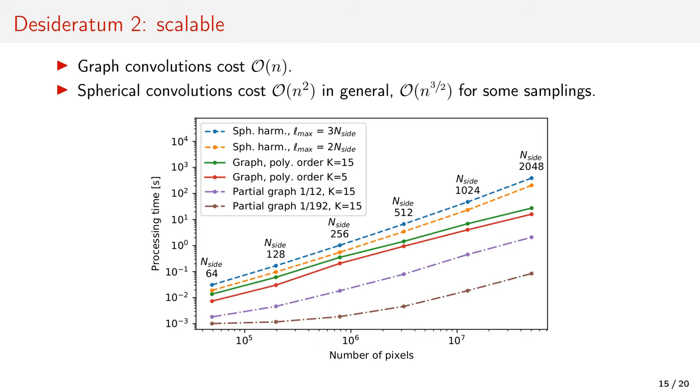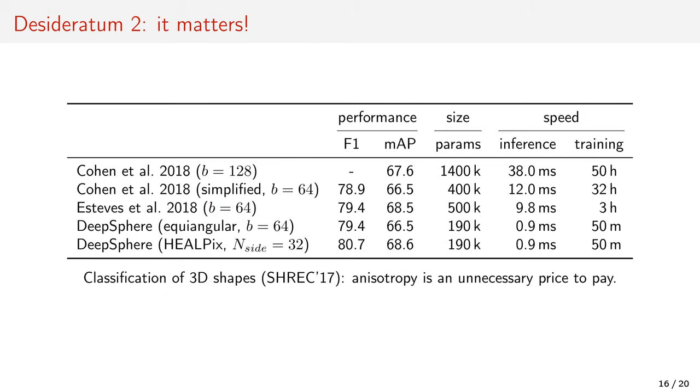Scalability. Graph convolutions scale linearly with the number of pixels. The spherical harmonic transforms scale quadratically. For maps with millions of pixels, graph convolutions are orders of magnitude faster, especially when we only consider a parcel of observations. This again matters in practice.